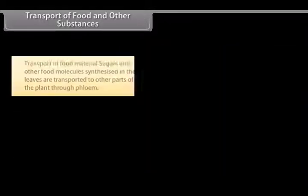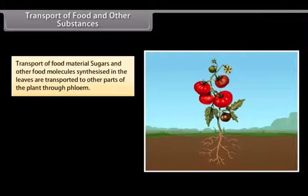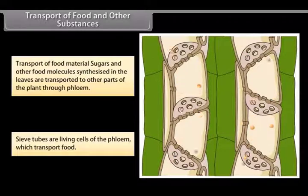Transport of food and other substances. Transport of food material: sugars and other food molecules synthesized in the leaves are transported to other parts of the plant through phloem. Sieve tubes are living cells of the phloem which transport food.